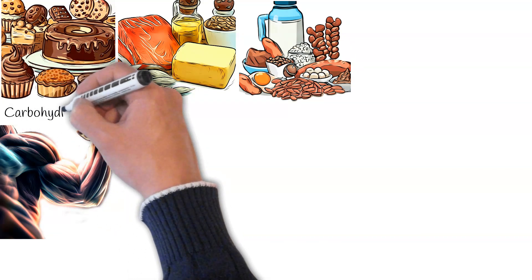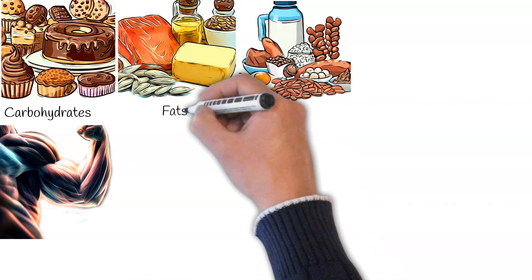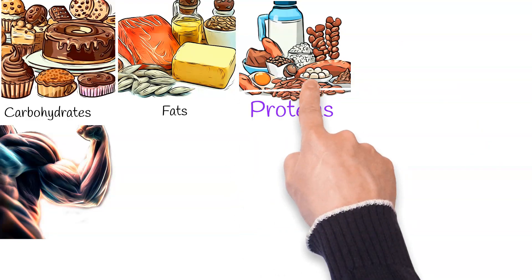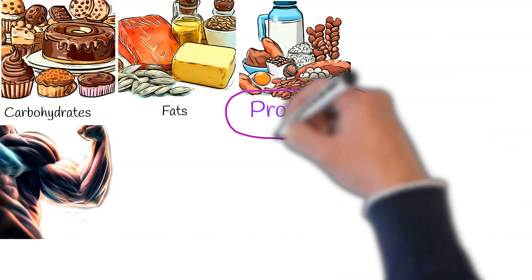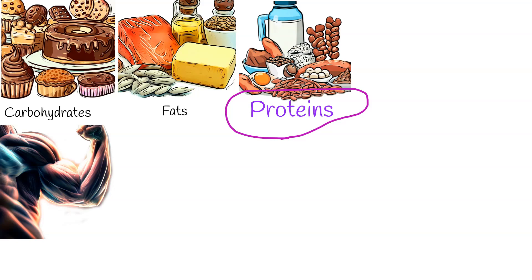Our daily diet primarily consists of three macronutrients: proteins, carbohydrates, and fats. In this discussion, our focus will be solely on proteins.